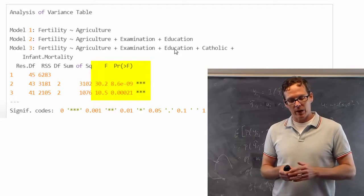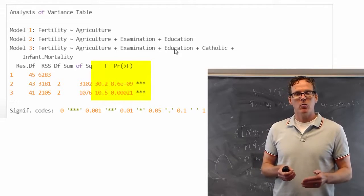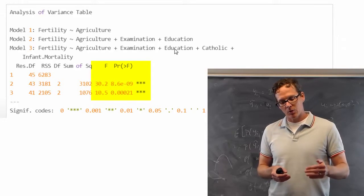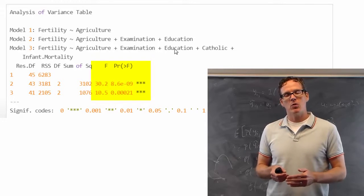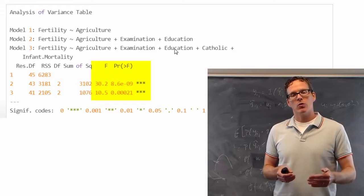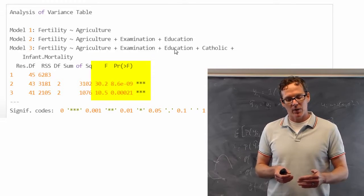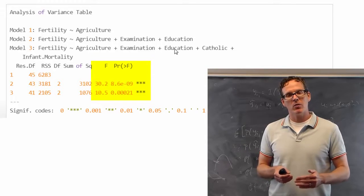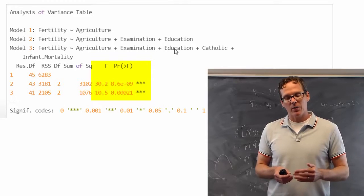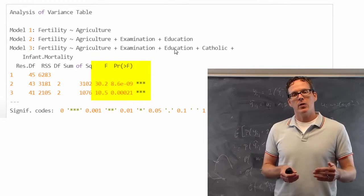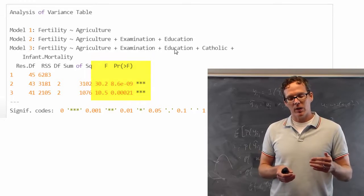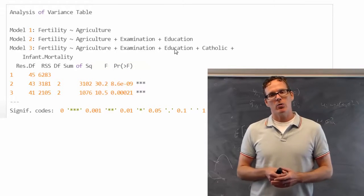This gives you the F statistic and the P value associated with each of them. And then here it shows that, yes, the inclusion of education and examination appears to be necessary over just looking at agriculture by itself. And then when I look at the next one, it says, yes, the inclusion of Catholic and infant mortality appears to be necessary beyond just including examination, education, and agriculture.